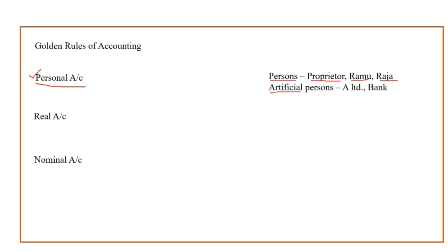Apart from real persons, artificial persons like a company, a corporation, or a bank — all these are artificial persons. Their transactions will also be recorded as per the personal account rule. What is the personal account rule? Debit the receiver, credit the giver. If the person is receiving money, he should be debited. If the person is giving something to the business, his account should be credited.